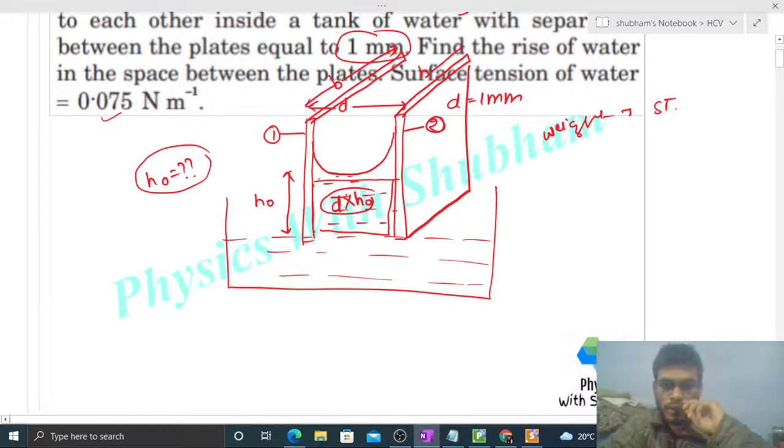So how much volume of water rose? That will be d into h naught into b. This much volume of water's weight will be volume into density of water, this is the mass, into g.